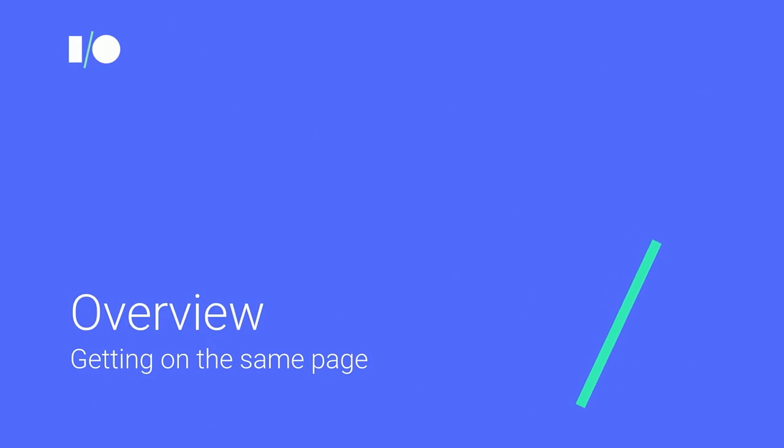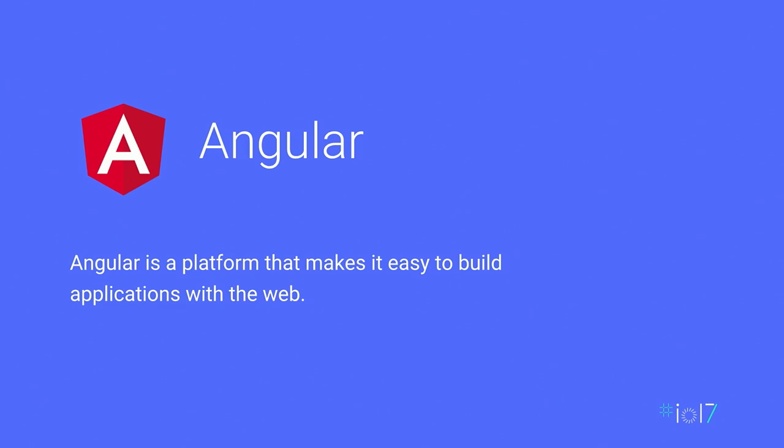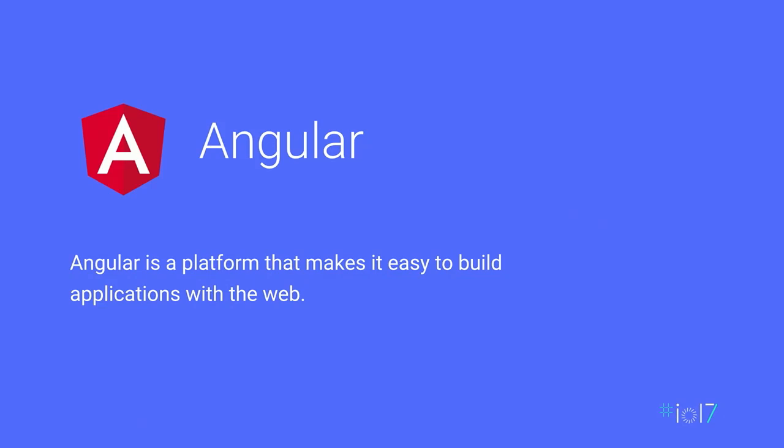Before we get started, we want to do a quick overview, throw out some terminology, and make sure we're all on the same page. Angular is a platform that makes it easy to build applications with the web. I use the term 'platform' very intentionally, because we're really trying to move from being a framework into a platform that owns the entire end-to-end developer experience — built from the core with the web and for the web.